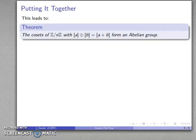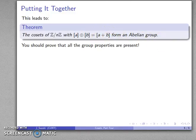And this leads us to the following result. When we put everything together, the cosets of Z divided by nZ, where we define coset addition this way, we get an abelian group out of it. Now, you should prove that all of the group properties are in fact present, that we have the identity inverse and so on and so forth. We'll leave that as an exercise.